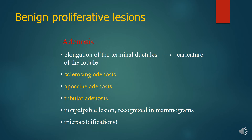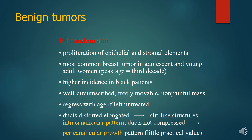Fibroadenoma is a proliferation of epithelial and stromal elements and is the most common breast tumor in adolescents and young adult women, with a higher incidence in Black patients. It presents as a well-circumscribed, freely movable, non-painful mass that may regress with age if left untreated. Ducts are distorted into elongated slit-like structures in an intracanalicular pattern or a pericanalicular pattern.